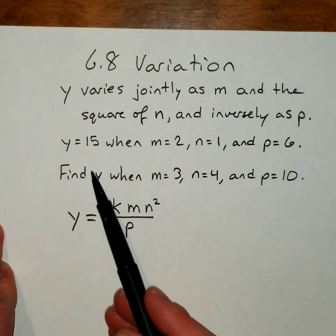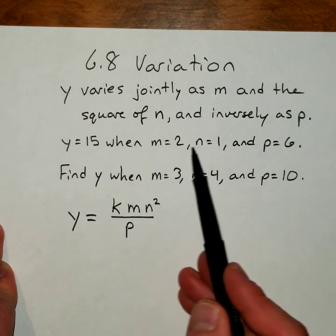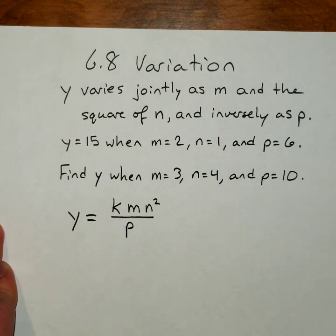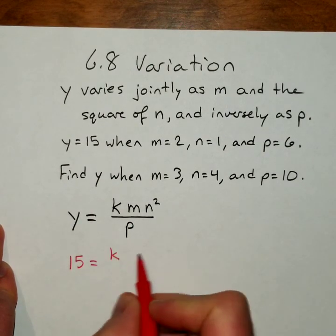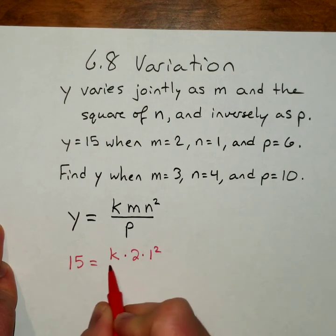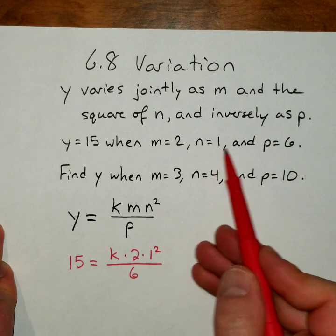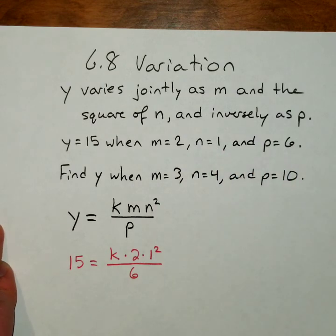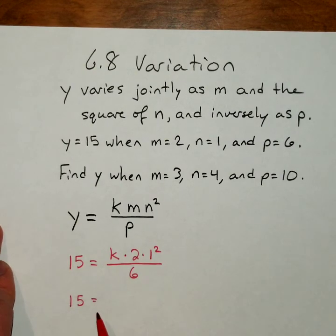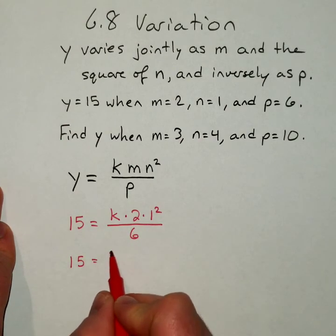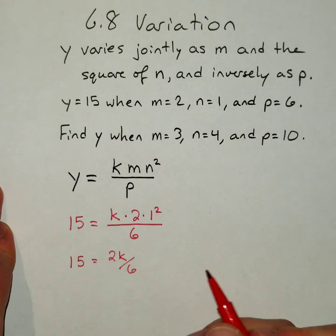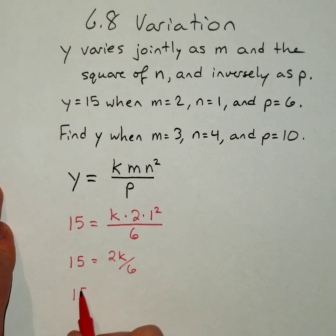So now we go through and solve. We need to find k. And they give us all the other variables. So we're just going to plug that stuff in. 15 equals k times 2 times 1 squared all over 6. m is 2, n is 1, p is 6. Then we simplify. So we get 15 is equal to... I'll move this up. k. Let's see, this is going to be 2k over 6. Well, really that's the same as k over 3 if I reduce that down.